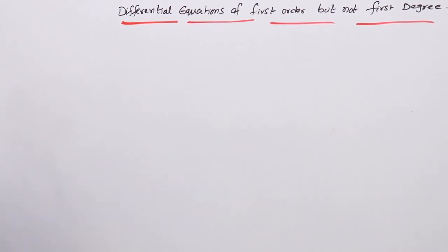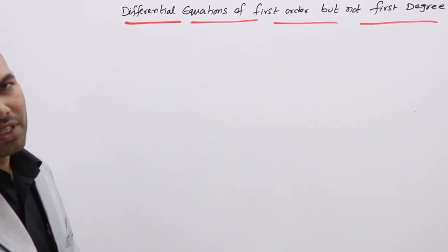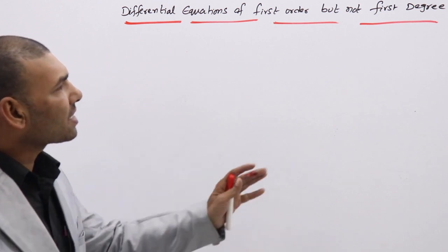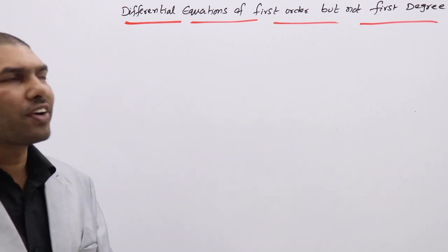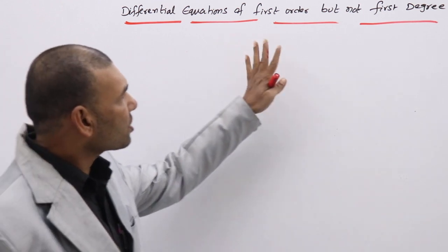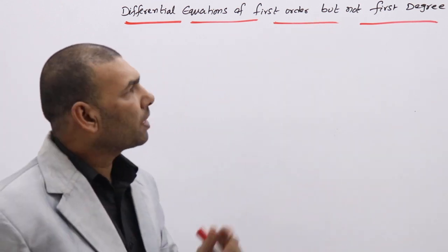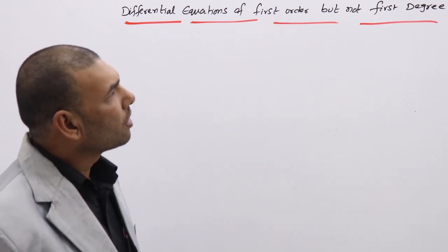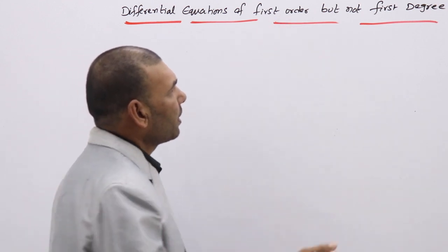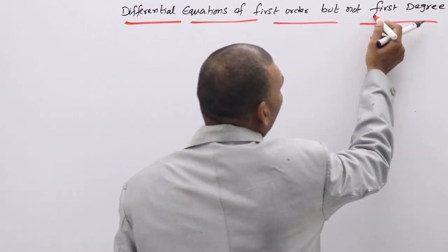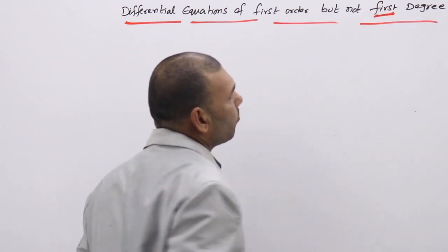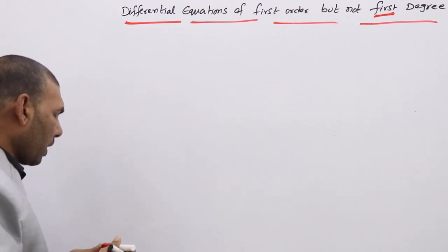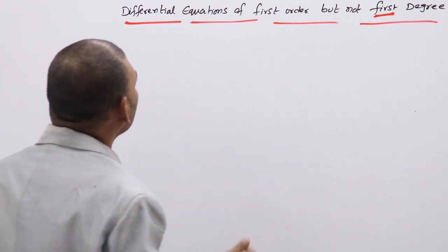Differential equations of first order but not first degree. Till now we discussed differential equations of first order and first degree. But now the order will be 1 but the degree will not be 1 — it will be more than 1. That type of differential equations we are going to discuss.